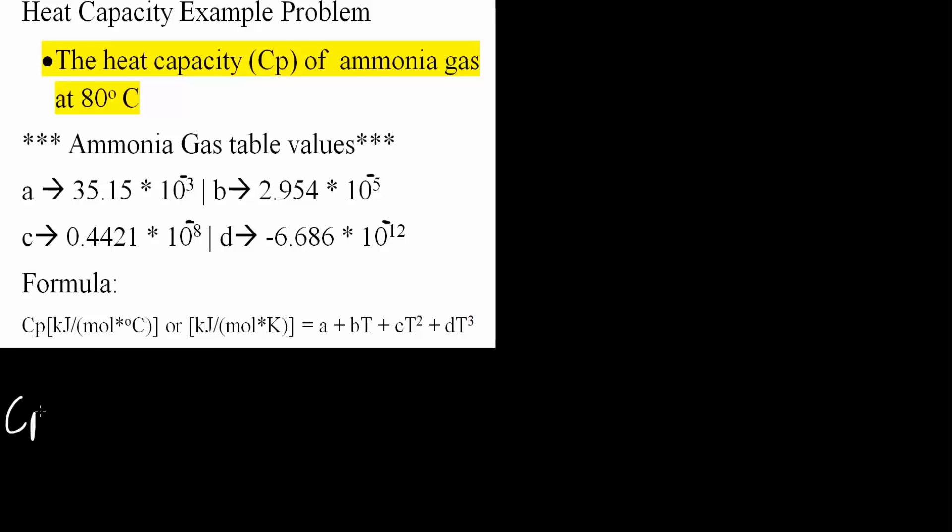So CP, the heat capacity, will equal A. A is 35.15 times 10 to the negative 3. This information right here was given in a table. Plus B.